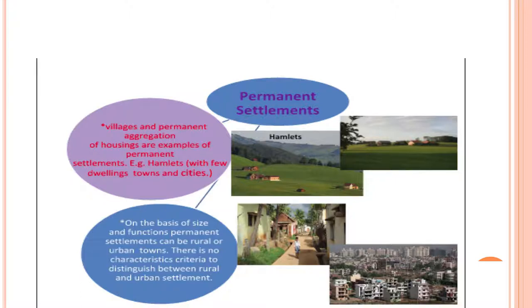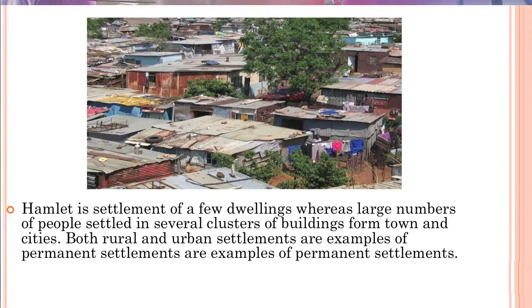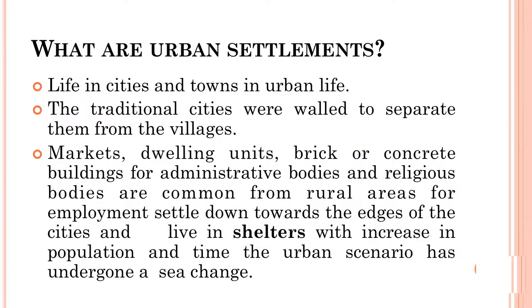There is no characteristic criteria to distinguish between rural and urban settlements. A hamlet is a settlement of a few dwellings, whereas a large number of people settled in several clusters of buildings form towns and cities. Both rural and urban settlements are examples of permanent settlement. Now we come to urban settlement.